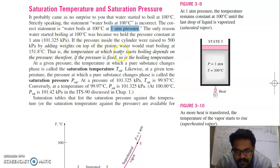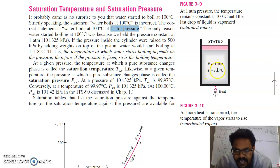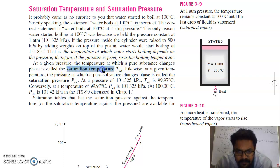If the pressure inside the cylinder were raised to say 5 atmospheric or 500 kilo Pascal by adding weights on top of the piston, water would start boiling at 151 degree Celsius. Due to the weight, the pressure within the cylinder increases; at 5 atmospheric, water won't boil at 100 degree Celsius — it will boil at 151 degree Celsius. The temperature at which a pure substance changes phase is called saturation temperature, and the corresponding pressure is called saturation pressure.